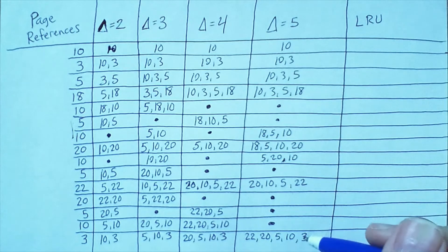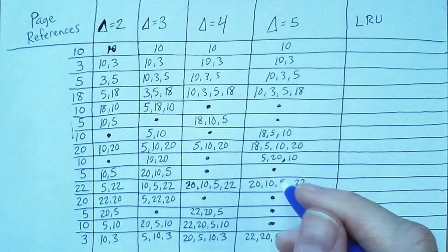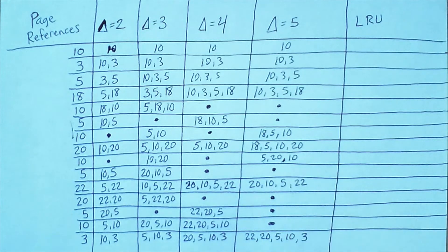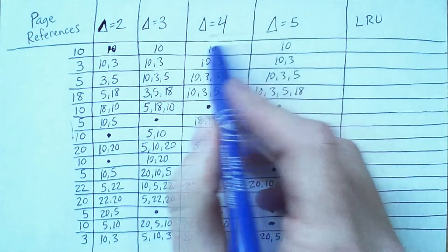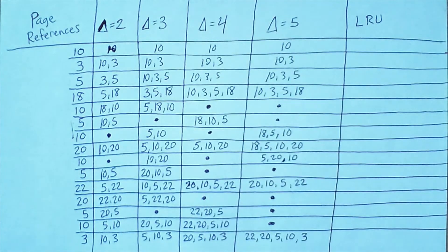Because if we look at these last three page references, 10, 5, 10, those are the only elements that we accessed within three steps. Of course, the size grows back up again and then shrinks again.